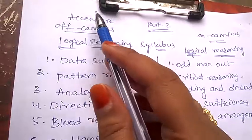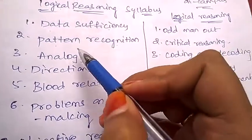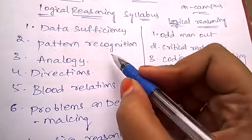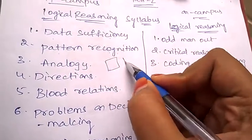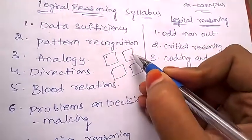First, coming to off-campus logical reasoning syllabus under Accenture: data sufficiency and pattern recognition. Under pattern recognition, they'll be giving you three patterns. I'll give you an example.